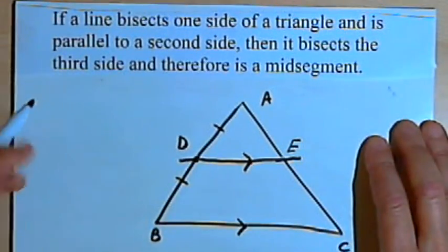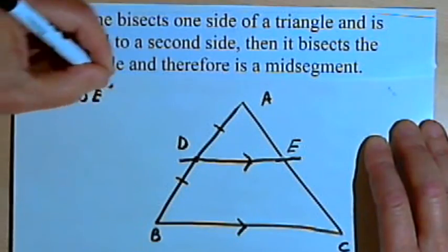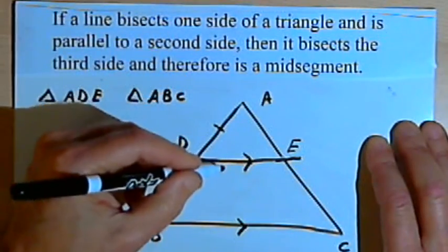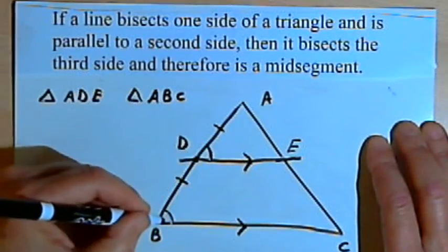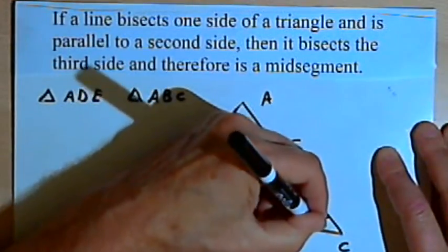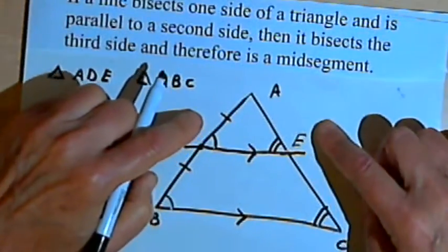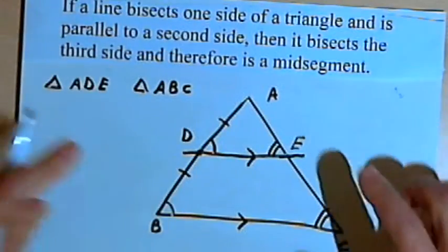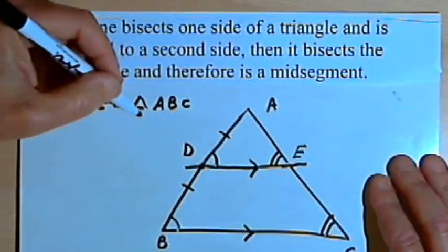We'll prove that pretty much the same way we proved the other one. I'm going to show that triangle ADE is similar to triangle ABC. I've got two parallel lines, so I'm going to mark the corresponding angles: angle B and angle ADE are congruent. Angle C corresponds to angle AED, so they're congruent also. So now I've got two triangles with two pairs of corresponding angles. If that's the case, those two triangles are similar — triangle ADE is similar to triangle ABC.